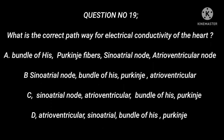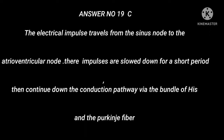Question number 19: What is the correct pathway for electrical conductivity of the heart? A. Bundle of His, Purkinje fibers, sinoatrial node, atrioventricular node. B. Sinoatrial node, bundle of His, Purkinje fibers, atrioventricular node. C. Sinoatrial node, atrioventricular node, bundle of His, Purkinje fibers. D. Atrioventricular node, sinoatrial node, bundle of His, Purkinje fibers. Answer number 19: C. The electrical impulse travels from the sinus node to the atrioventricular node. There the impulses are slowed down for a short period, then continue down the conduction pathway via the bundle of His and the Purkinje fibers.